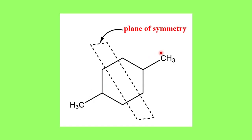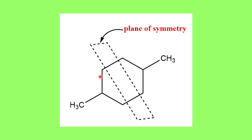This is 1,4-dimethylcyclohexane. In this system you can see that a plane of symmetry can be passed either from this portion or we can also pass a plane like this. So this is an example where a plane of symmetry is passing, and this molecule will be optically inactive and hence will also not show stereoisomerism.